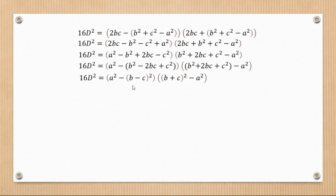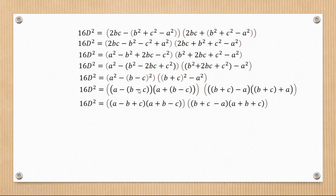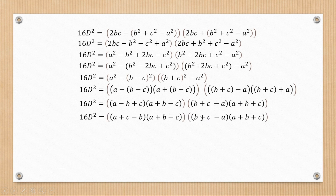We now have another difference of two squares. Converting it into bracket form, and then opening the brackets: (a − (b − c)) and (a + (b − c)), which expands to (a − b + c) and (a + b − c). Similarly the other pair gives (b + c − a) and (a + b + c). Rearranging to bring like groups together, we have (a + c − b), (a + b − c), (b + c − a), and (a + b + c).